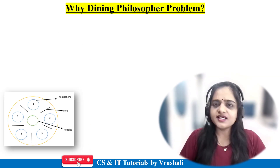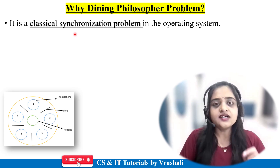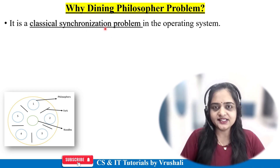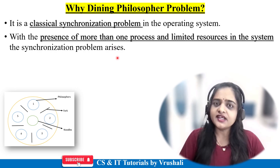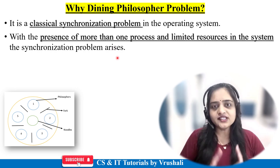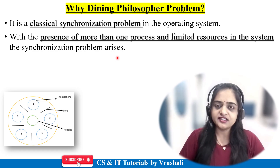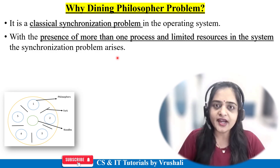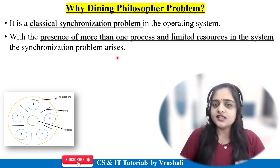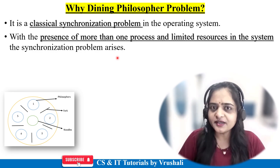The first question is: why the dining philosopher problem in operating system? The dining philosopher problem is one of the classical synchronization problems in operating system. As discussed earlier, in an operating system there are multiple processes and all these processes communicate with each other. They share information with each other, and for communication and sharing purposes they require resources. For example, suppose a particular process wants to print a document — it requires the printer.